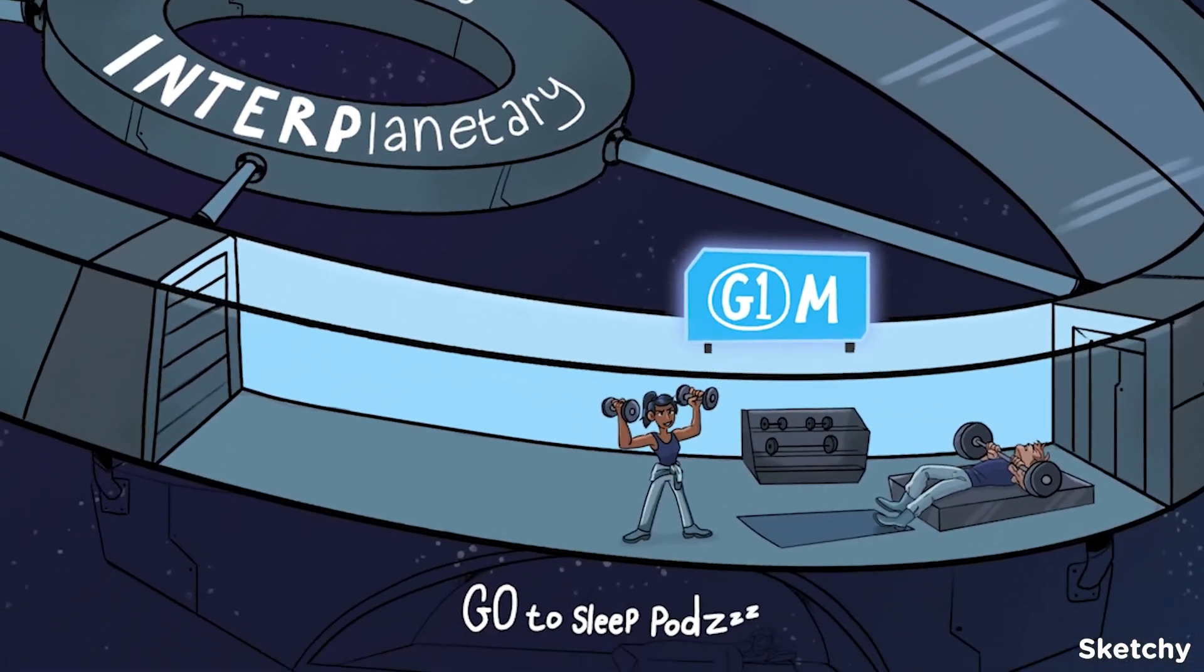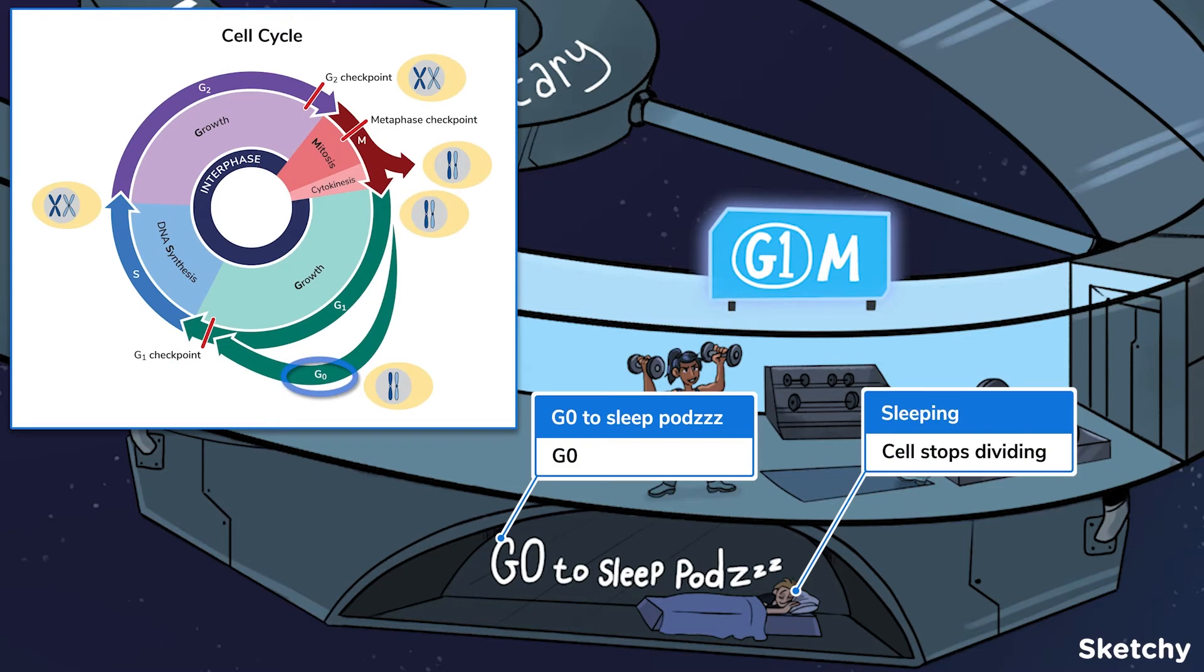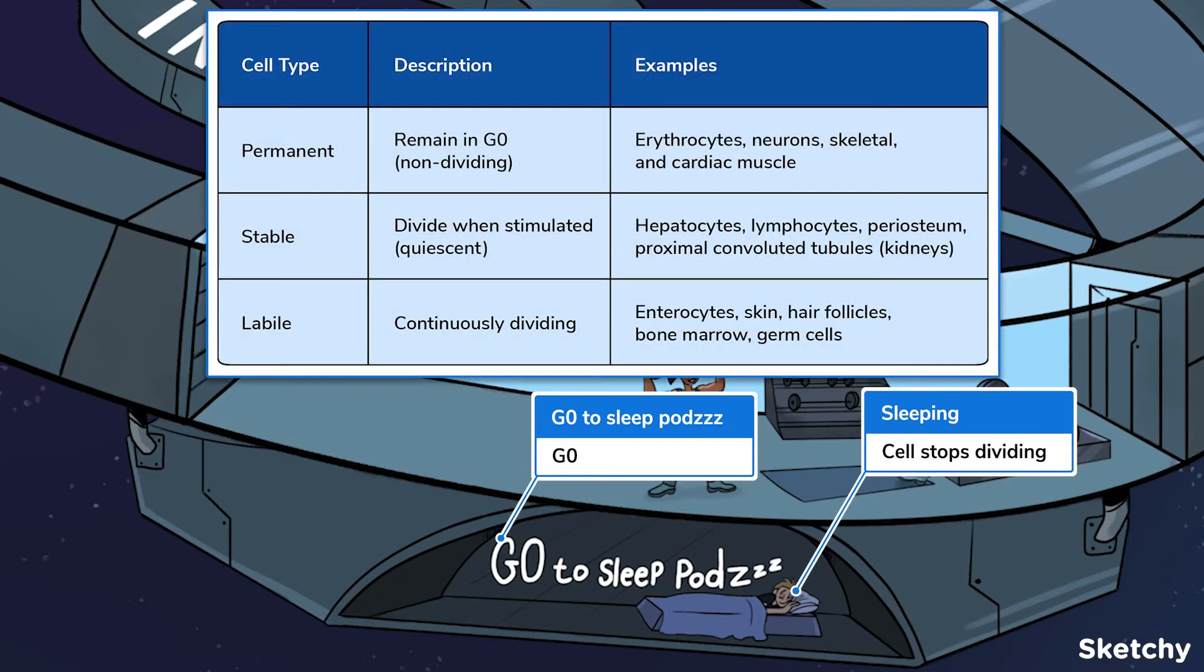So this cell has completed a full cycle, but you're probably wondering what happens to cells that don't normally divide. Well, from G1, they can enter G0, a dormant phase in which cells are metabolically active but slow down protein synthesis, don't grow, duplicate, or divide. To show that, we drew a go to sleep pod for our astronauts.